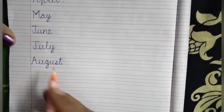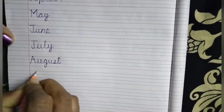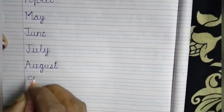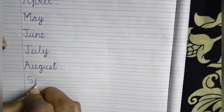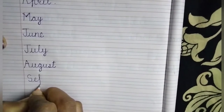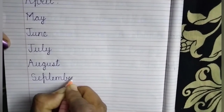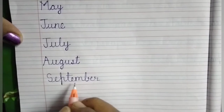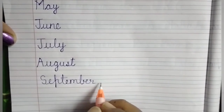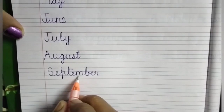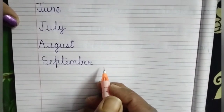September. September is our ninth month of the year. The spelling of September is S-E-P-T-E-M-B-E-R. September is our ninth month of the year.